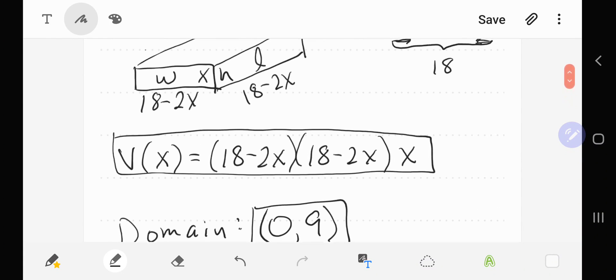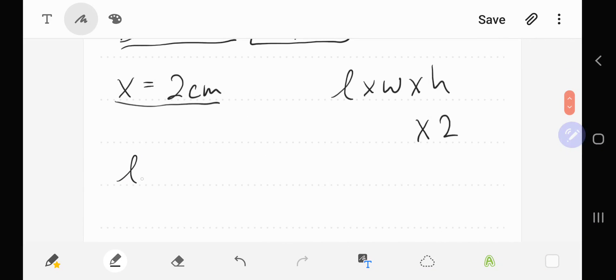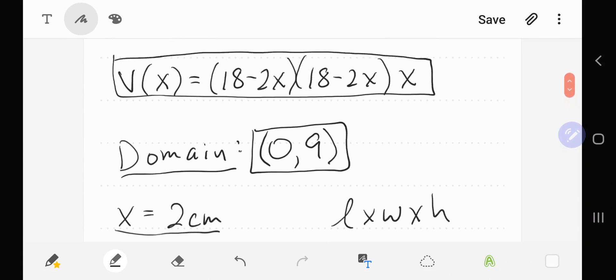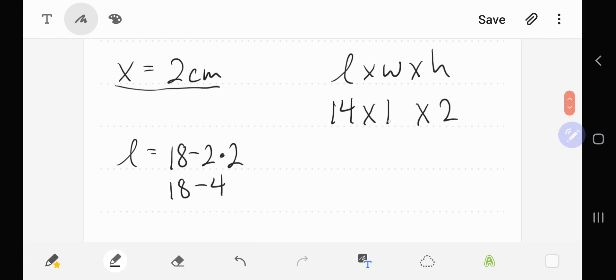The length is 18 minus 2x. Since x is 2, that's going to be 18 minus 4, which is 14. And remember the width was the same as the length, so the width is going to be 14 also. So that gives us the dimensions of the box: 14 by 14 by 2 centimeters.